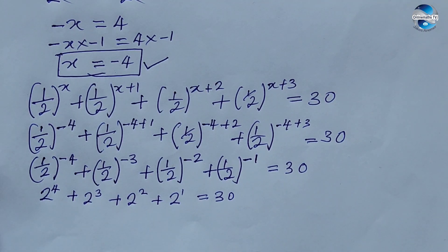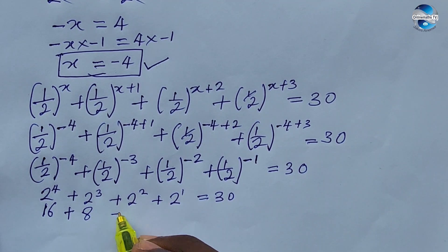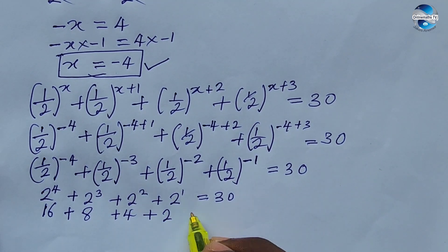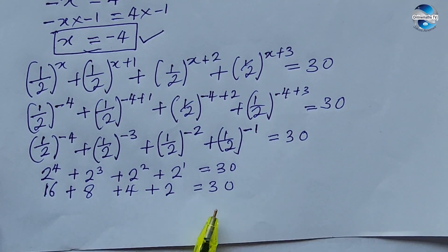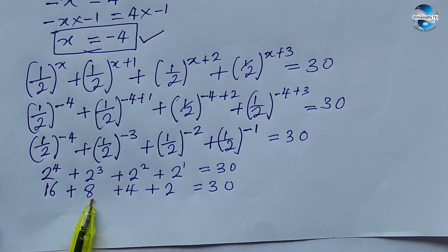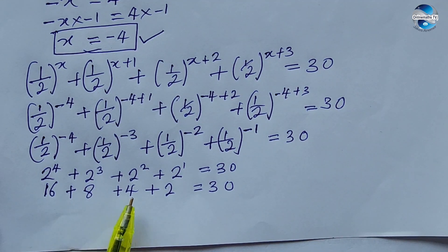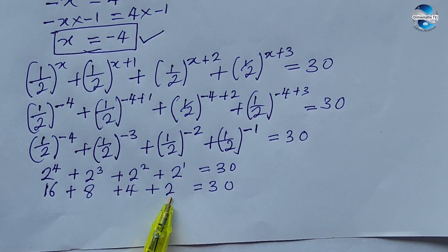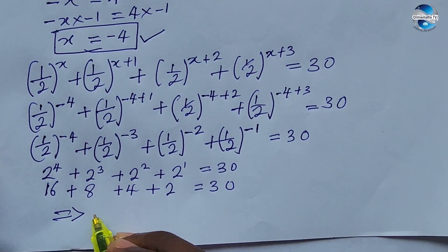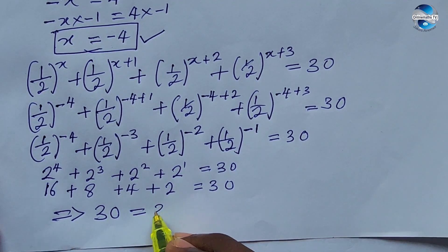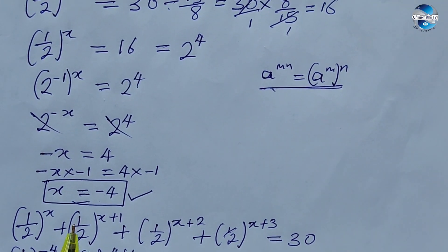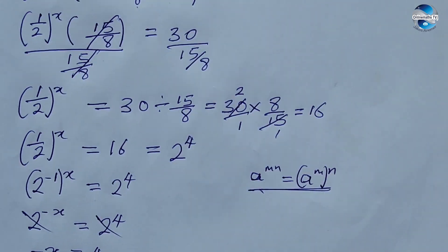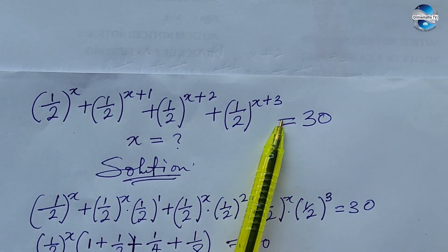Evaluating: 2^4 = 16, 2^3 = 8, 2^2 = 4, 2^1 = 2. Adding: 16 + 8 = 24, 24 + 4 = 28, 28 + 2 = 30. So we have 30 = 30, which confirms that x = −4 is correct and satisfies the original equation.